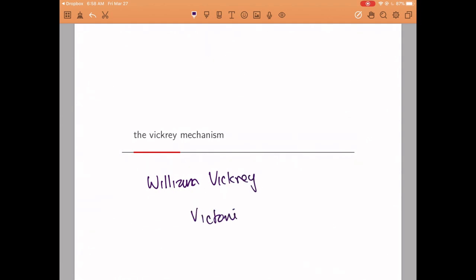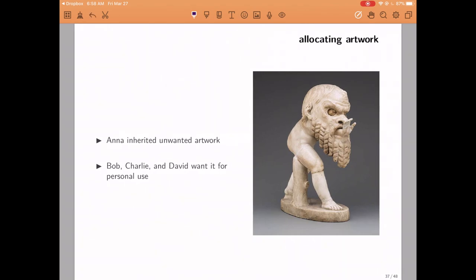Vickrey's original work was in the context of financial assets. However, we are going to be talking about allocating one piece of art. The story is that Anna inherited some unwanted piece of art that she doesn't really like, and there are three people that might be interested in getting it: Bob, Charlie, and David. Let us assume that none of them plans to resell the object and therefore their value for it is determined by how much they like it and how much utility they would derive from having it in their houses or in their offices.